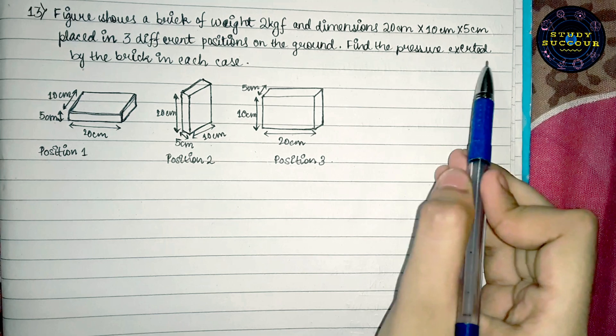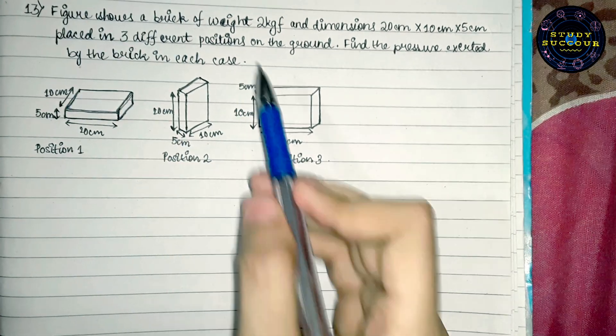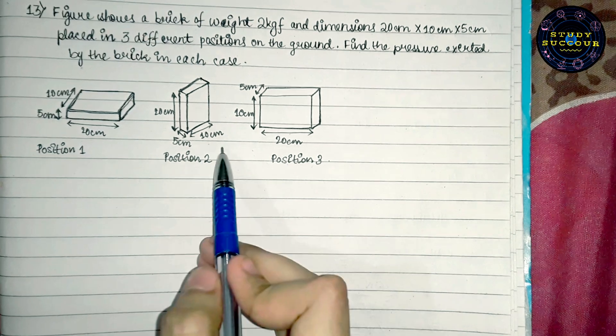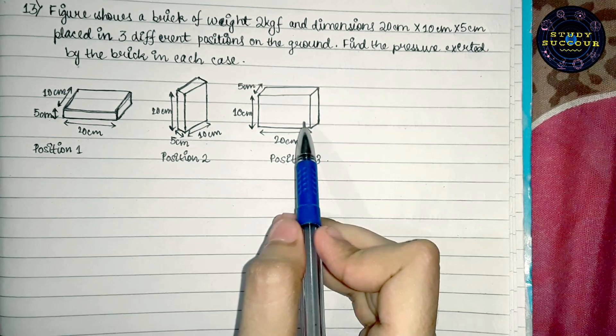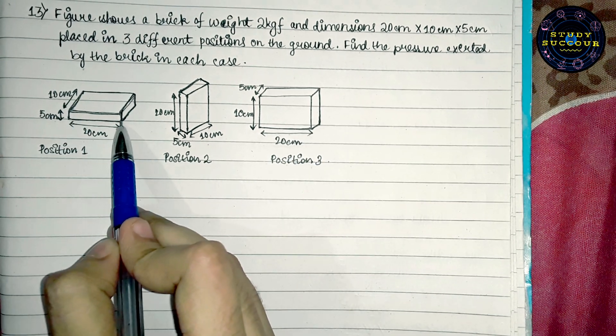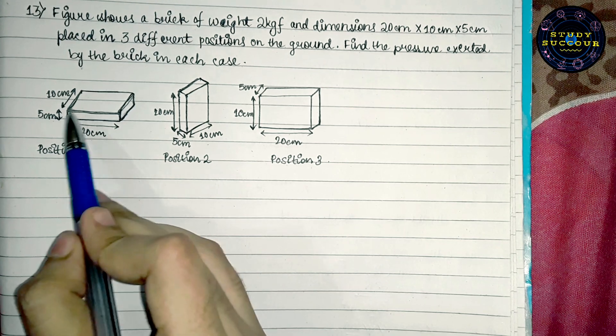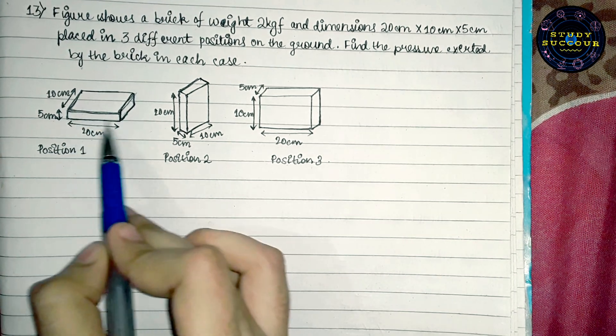Find the pressure exerted by the brick in each case. Now, here in the diagrams we can see the three types of positions in which the brick can be placed. In first position, we can see that this part is the base, which is same as the top. For this position, the area of the brick will be the length into breadth of the base.